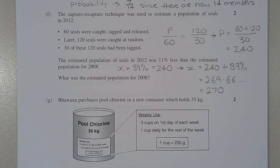Later, 120 seals were caught at random. 30 of these 120 seals had been tagged. The estimated population of seals in 2012 was 11% less than the estimated population for 2008. What was the estimated population for 2008?